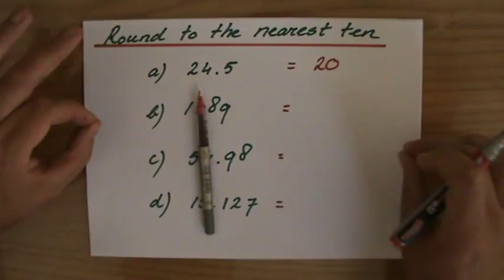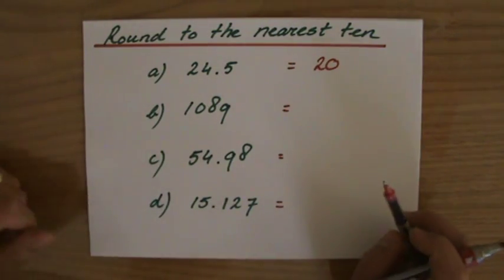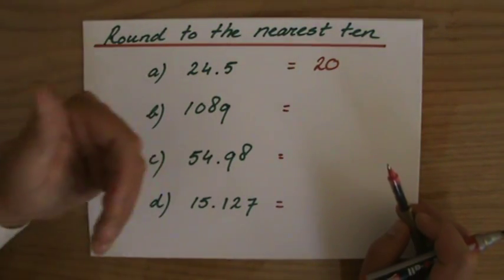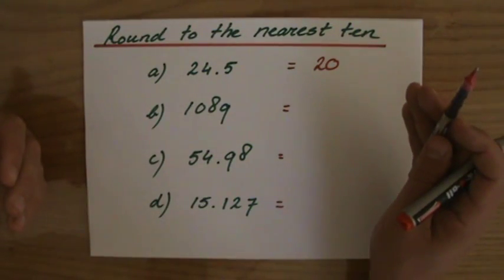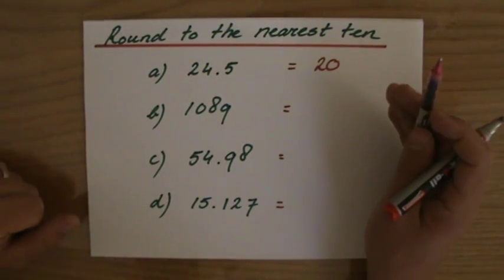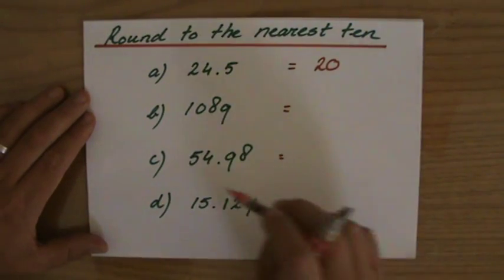If I would draw a number line, 24.5 is simply nearer to 20 than it would be, or than it is to 30. Okay, and check my previous video where I have been drawing those number lines.